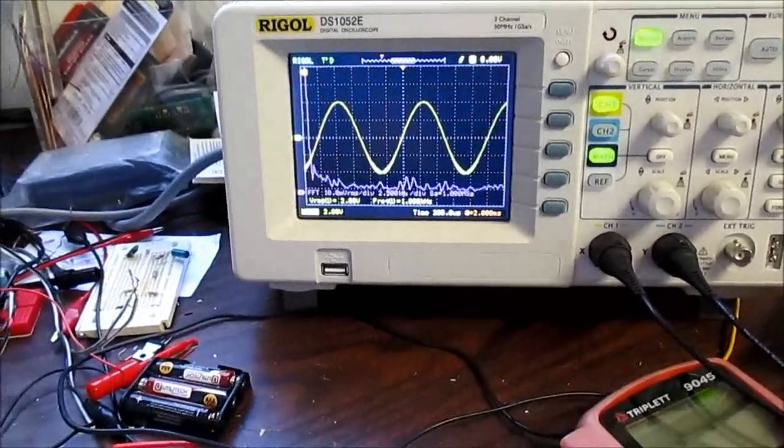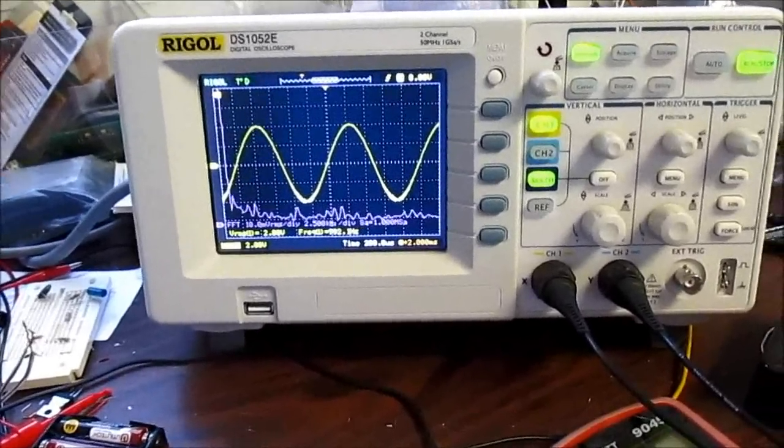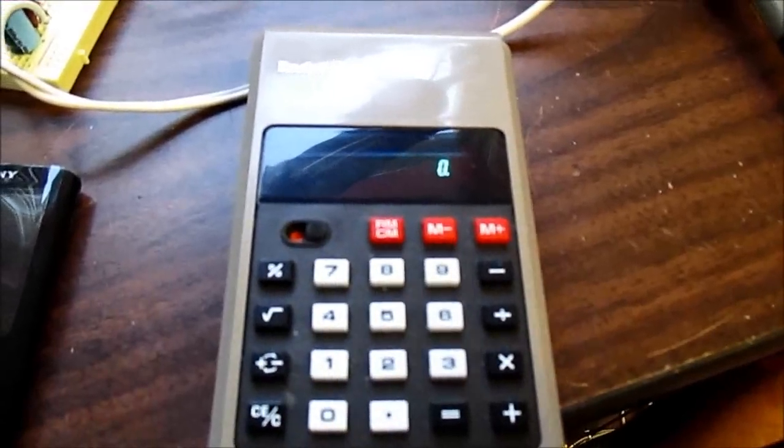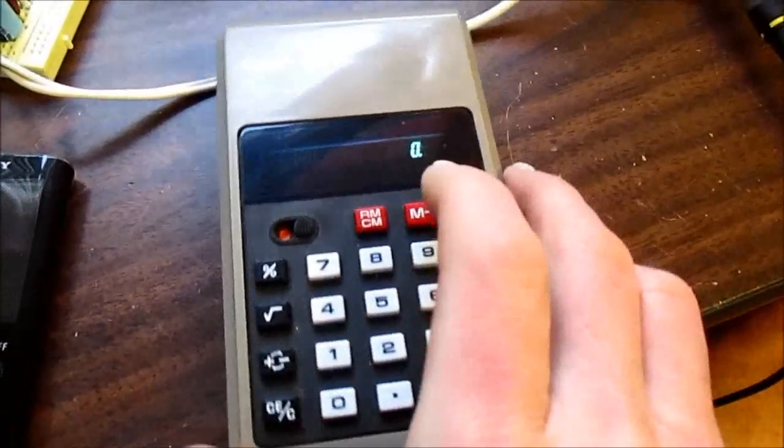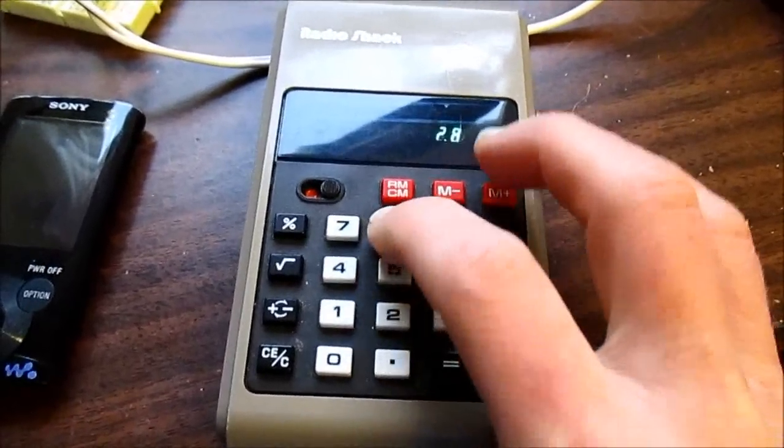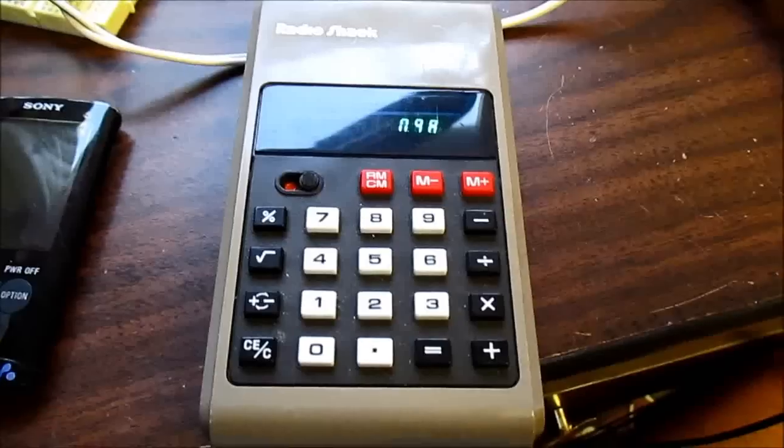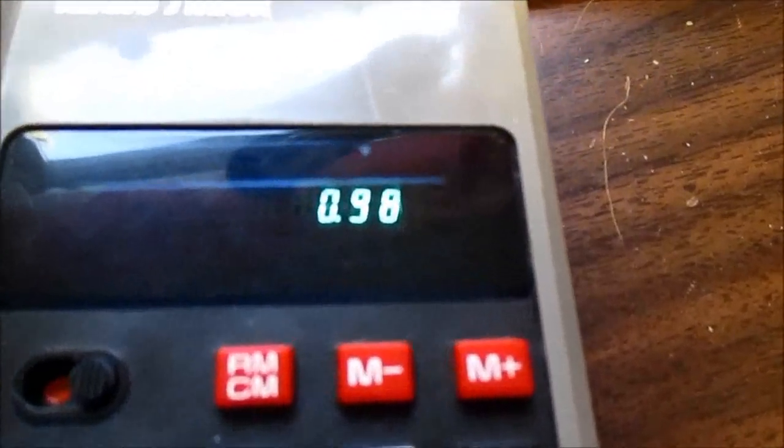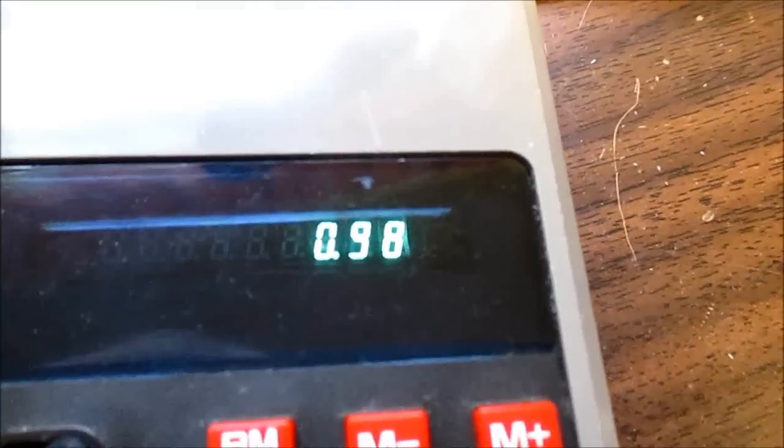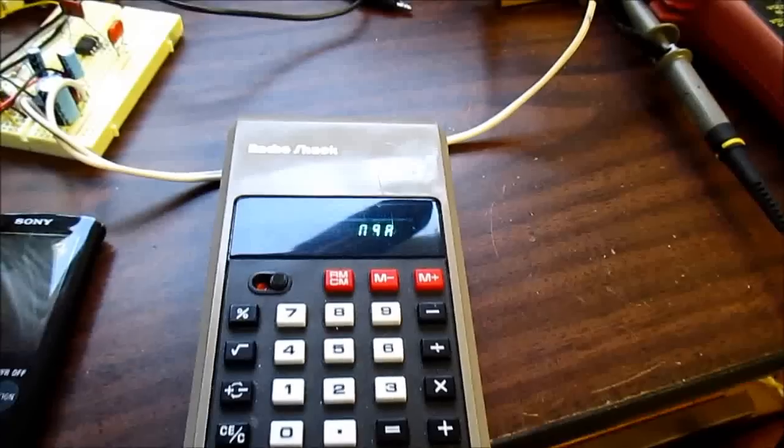And where's my little calculator at? I always don't have my calculator. I want to use my Radio Shack vintage VFD calculator. Okay, 2.8, square that, divide that by the load. And we're coming in about 1 watt, 0.98, 980 milliwatts. And we'll just say it's a watt.